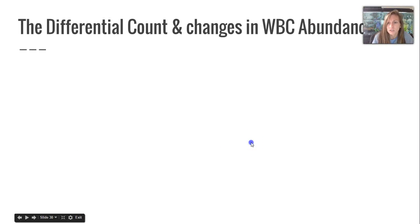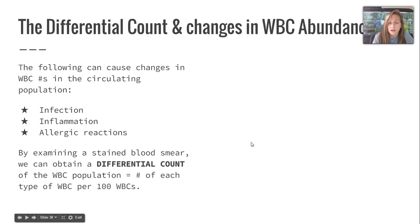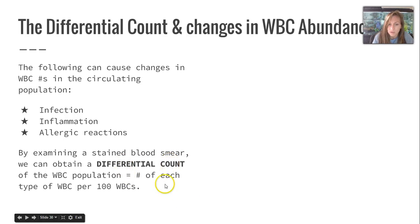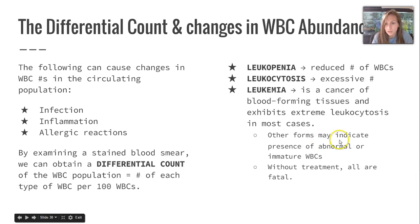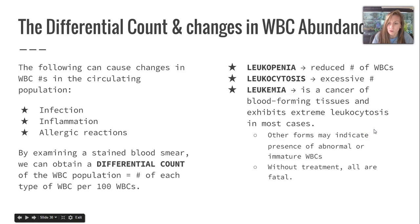The differential count and changes in white blood cell abundance go hand in hand. White blood cell numbers change with infection, inflammation, or allergic reactions, and we can observe this by examining a stained blood smear — this is called a differential count, where we take the number of each type of white blood cell per 100 white blood cells counted. Leukopenia refers to a reduced number of white blood cells, while leukocytosis is an excessive number. Leukemia is a cancer of blood-forming tissues that exhibits extreme leukocytosis in most cases; other forms may involve abnormal or immature white blood cells known as blasts, and without treatment, unfortunately all are fatal.